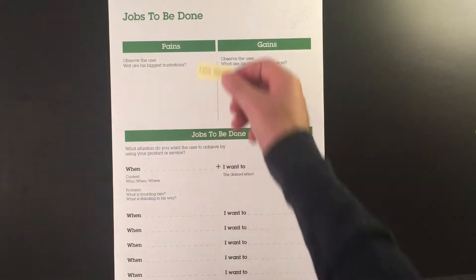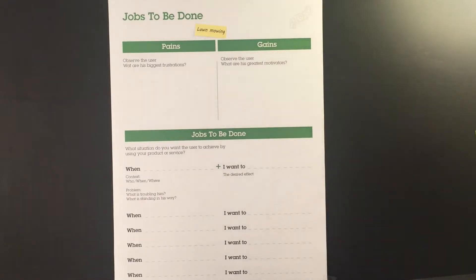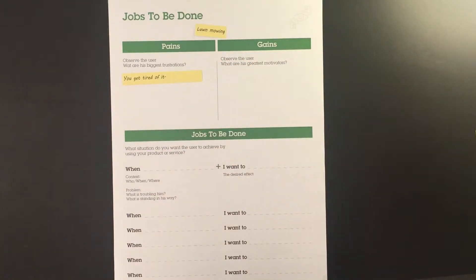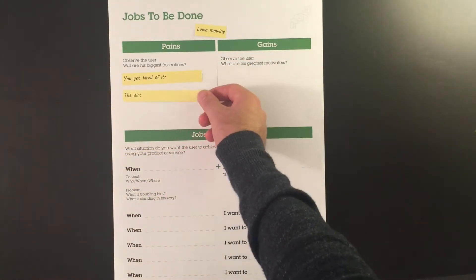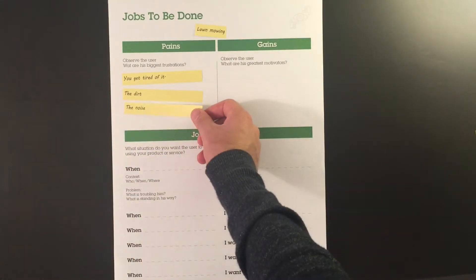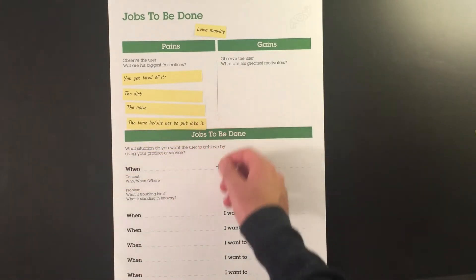It starts off with naming the topic, which in this case is mowing the lawn. First of all we need to sum up all the pains and gains. The pains in this case are the fact that mowing the lawn is tiring. You get dirty, the machines make a lot of noise, and it does take quite a bit of time that you could have spent on something else.